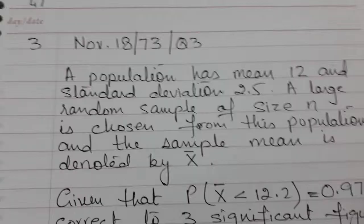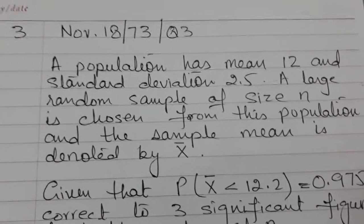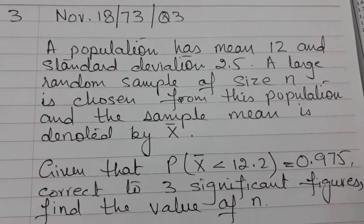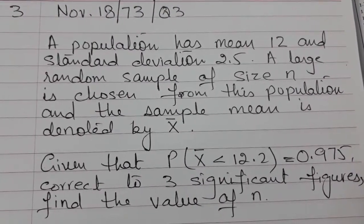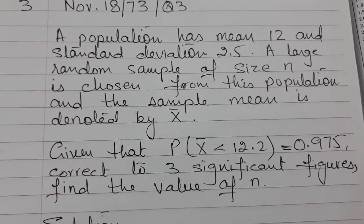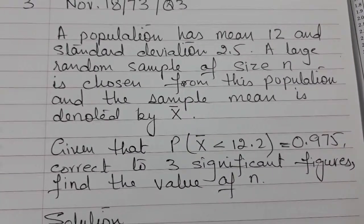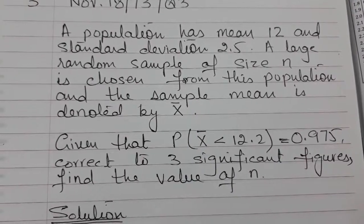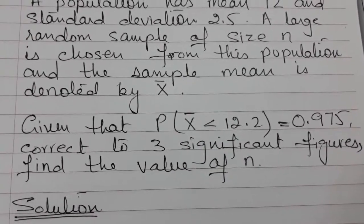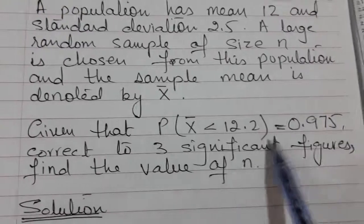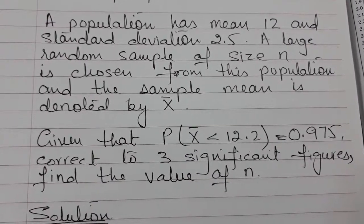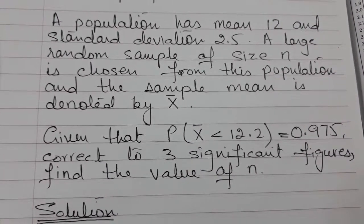Now let's see the last question of this video. This question is picked from November 18, variant 7-3, question 3. A population has mean 12 and standard deviation 2.5. You have to calculate a large sample size n from this population. The sample mean is denoted by x-bar. The condition given is that the probability of the sample mean being less than 12.2 is 97.5%, which is 0.975. Find the value of n.